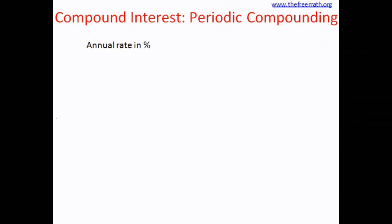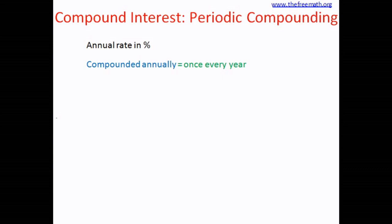Many times interest is charged yearly, but sometimes the interest calculation is done more than once within the year. To understand when the interest calculation is done, they mention in the problem the compounding period. If the problem says compounded annually, that means the interest is calculated once every year, typically at the end of the year.